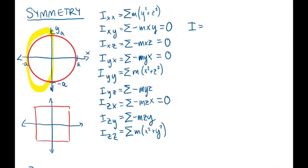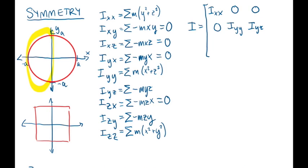So far, our inertia tensor looks like a matrix with I_xx, I_yy, and I_zz on the diagonal and zeros everywhere off-diagonal. This is what we'll see with reflective symmetry — some of the products of inertia are zero.